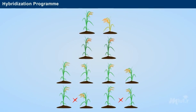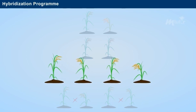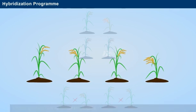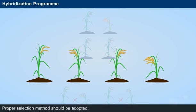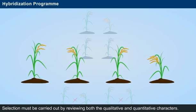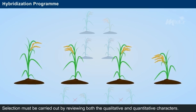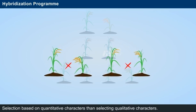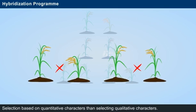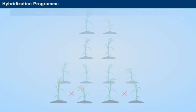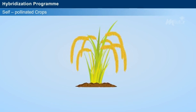Crop improvement mainly relies on handling segregating generations obtained from crosses. Among the different crosses made, a proper selection method should be adopted. Selection must be carried out by reviewing both qualitative and quantitative characters. However, selection based on quantitative characters is often difficult and time-consuming compared to selecting qualitative characters.